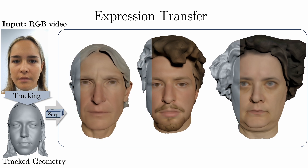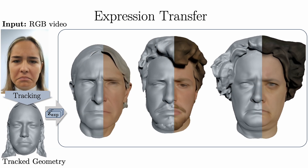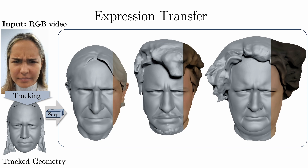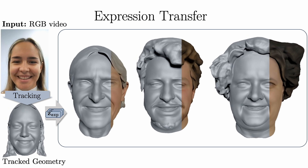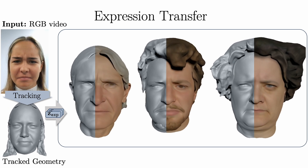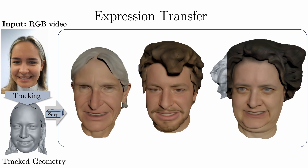Finally, we present two more examples of expression transfer. On the left, we see the input video and tracked geometry. On the right, we show the reenactment results on different identities.